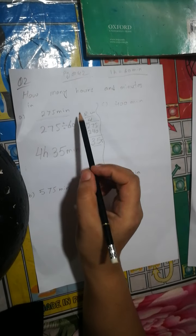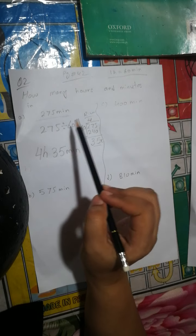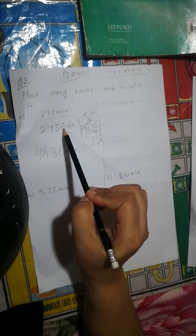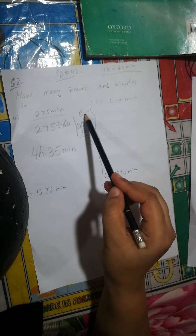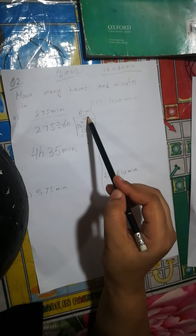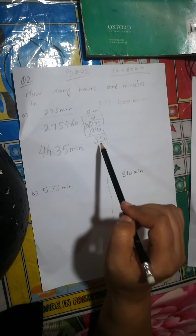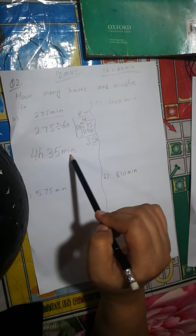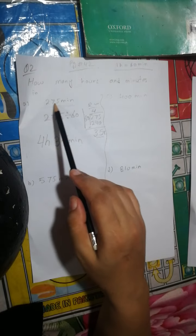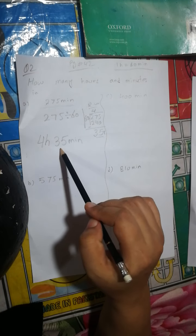When you divide by 60, the number you get on top will be the hours, and the number left over that is less than 60 will be the minutes. In 275 minutes you are having 4 hours and 35 minutes.